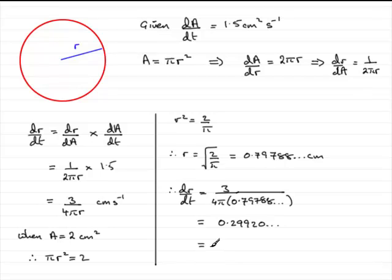We're to give the rate of change to three significant figures, so that's 0.299, and don't forget the units, that's centimeters per second. That brings us to the end of this question.